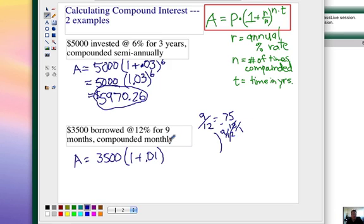The shortcut here for this exponent is how many times over that 9 month period are you going to compound it? Well, it's compounded once every month. There's 9 months, so that means you're going to compound it 9 times.